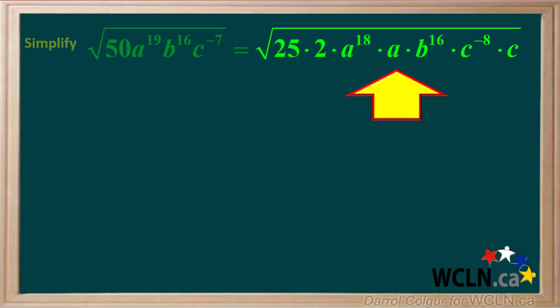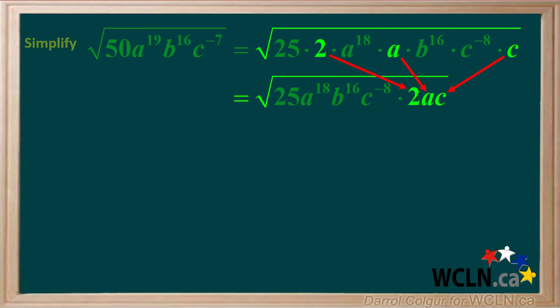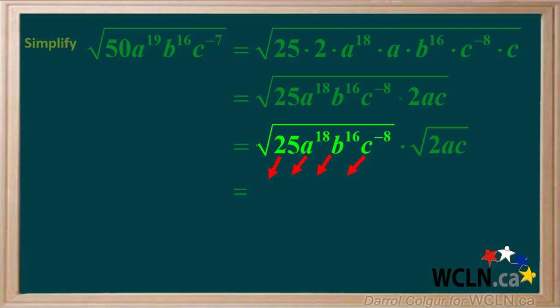So now we have this expression. We'll rearrange the radicand so that all the perfect squares are together on the left side, and the leftovers — 2 times a times c — are together on the right side. Now we'll split the single square root into two separate square roots: the square root of all the perfect squares times the square root of the leftovers. Taking the square roots of all the perfect squares gives us 5a to the 9th b to the 8th c to the negative 4th.